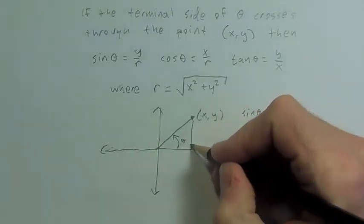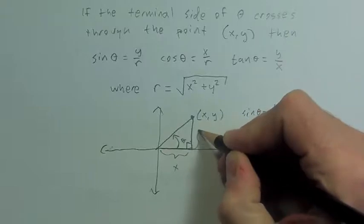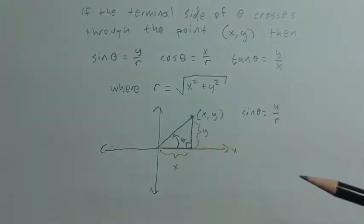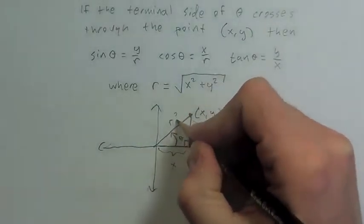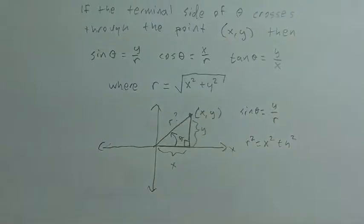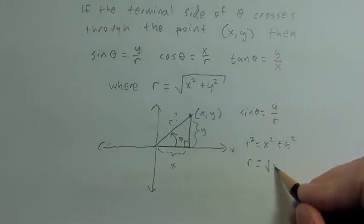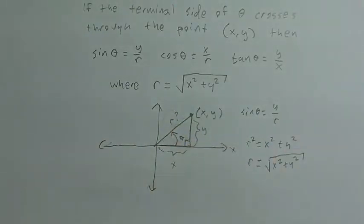If we make a right triangle, and say this length is x and this length is y, this does sort of match what we know. Sine of theta would be opposite, which is y, over hypotenuse. Is r our hypotenuse? By the Pythagorean theorem, r squared equals x squared plus y squared, and taking the square root of both sides gives r equals the square root of x squared plus y squared. Notice I'm not doing plus or minus here — r, this distance, we always want to be positive.